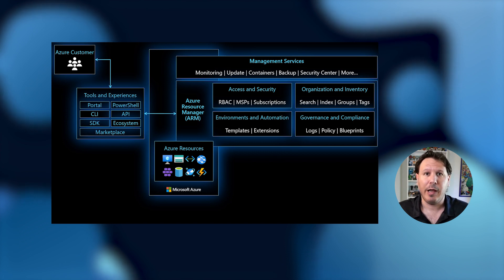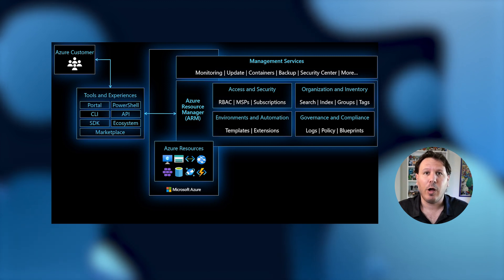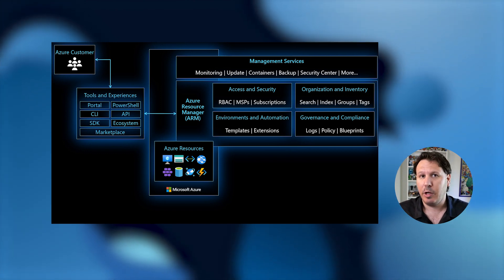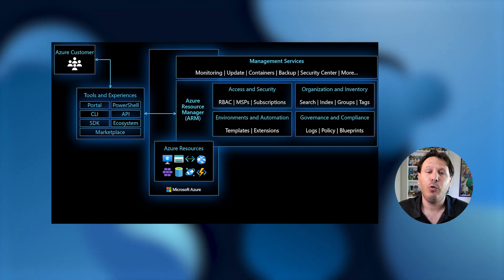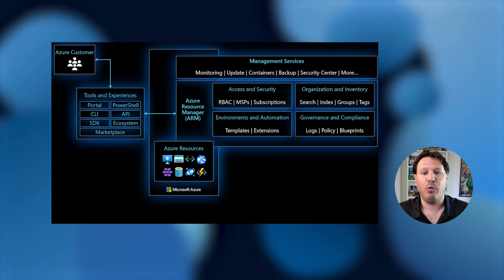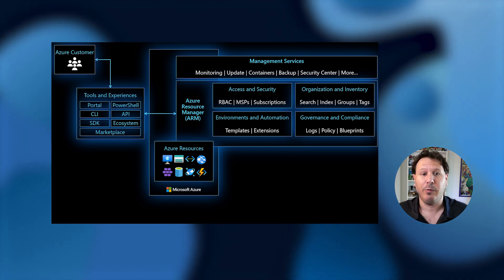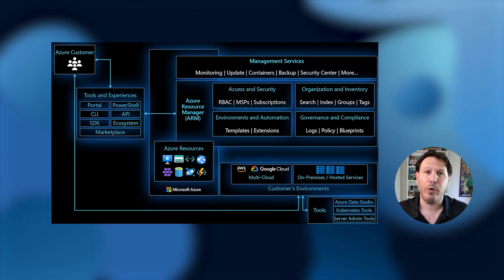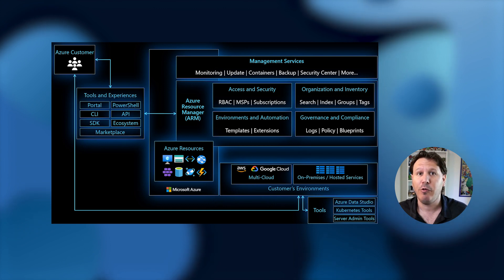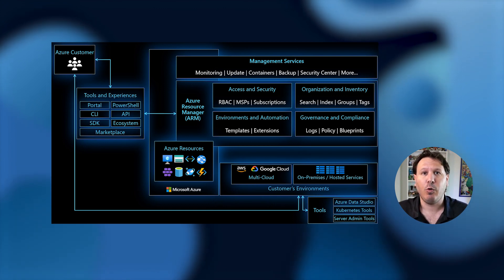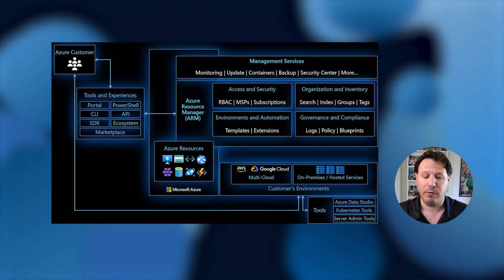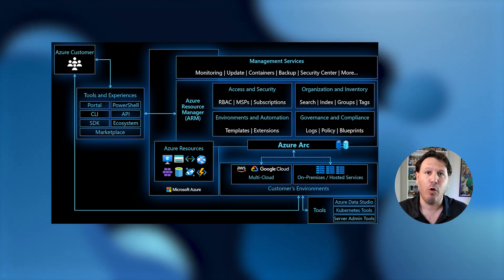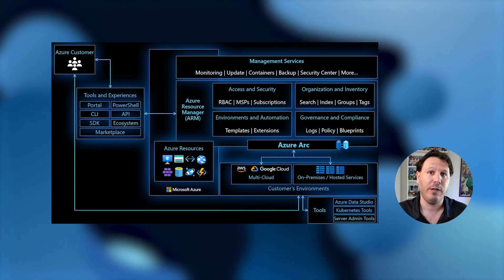If you look at the diagram, you're going to start on the left as the Azure customer using all the tools he's familiar with — the SDKs, the API, PowerShell, and the UI. From there, he's going to go into Azure to enjoy all the rich capabilities when it comes to environments, automation, access and security, organization, et cetera. We're looking at what you have on-premises and in other clouds, and we want to bring those resources from your multi-cloud strategy into Azure and represent them as first-class citizens. Azure Arc extends the Azure Resource Manager control plane to represent those resources as first-class citizens inside Azure.